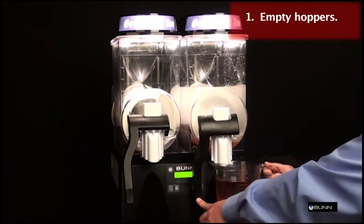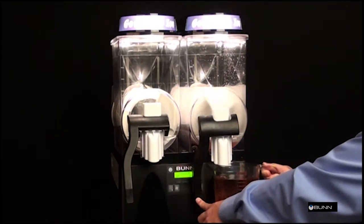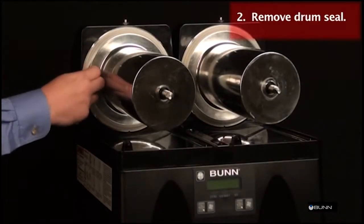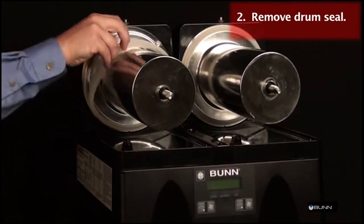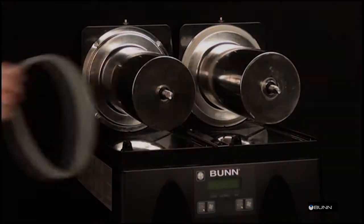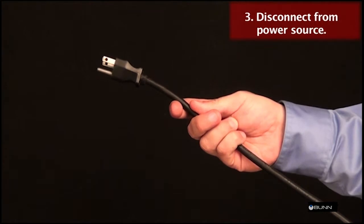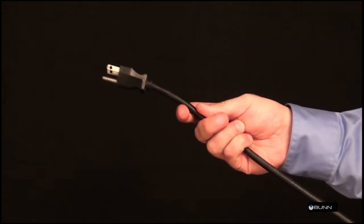Empty all products from hoppers. Remove and clean hopper. Remove the cooling drum seal from the rear of the drum. Disconnect the dispenser from the power source before the removal of any panel or the replacement of any component.